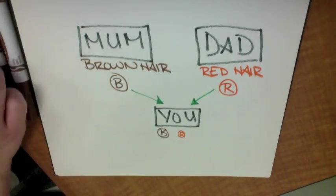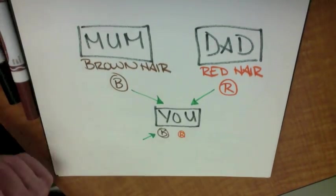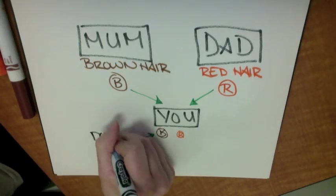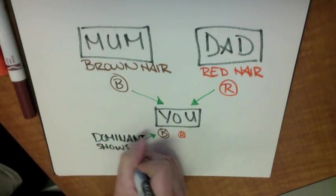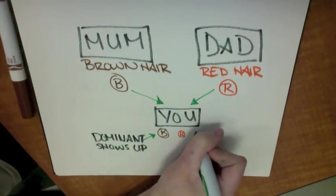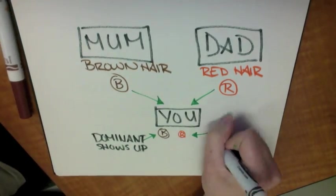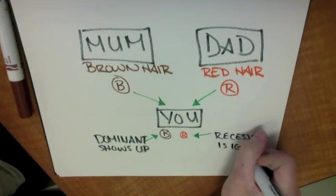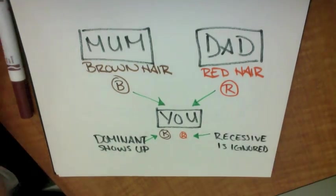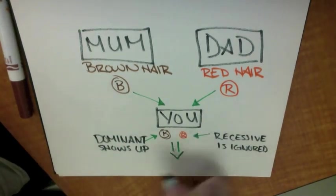The dominant allele decides what your body will show. Dominant is the most influential allele. The other one that's ignored is called the recessive. It doesn't show up, but it is still present in your genes.